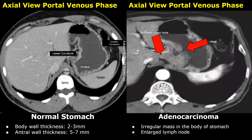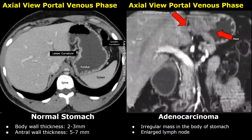In this image there is an irregular mass in the body of the stomach and there is an enlarged lymph node outside the stomach. This rounded high-density structure is the enlarged lymph node, suggesting advanced stage cancer. In the coronal plane we can see the irregular mass and also the rounded enlarged lymph node.